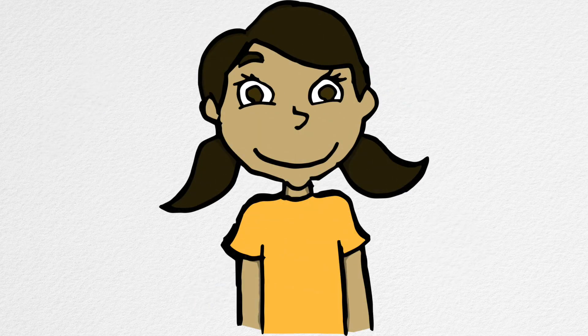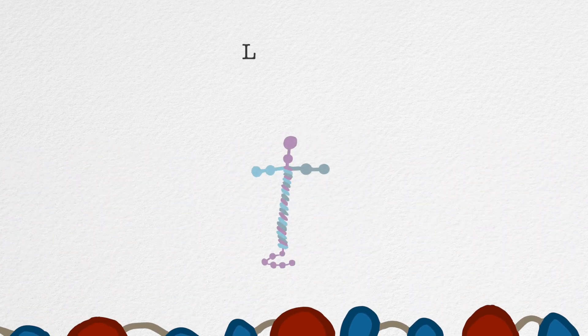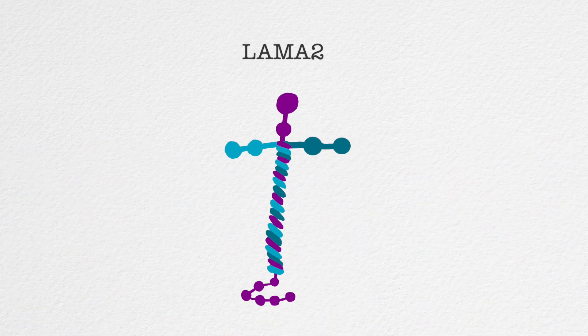Children with LAMA2-CMD have mutations in the LAMA2 gene and cannot produce the LAMA2 protein, which is essential for healthy muscles and nerves.